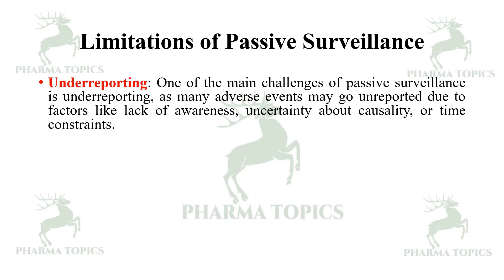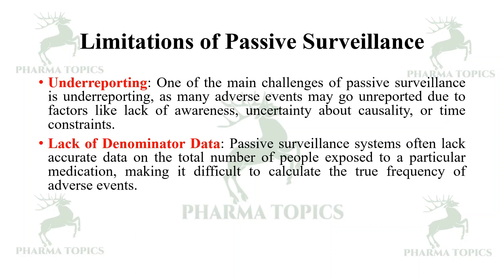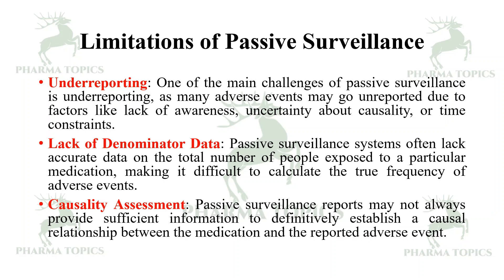Limitations of passive surveillance: Under-reporting is one of the main challenges, as many adverse events may go unreported due to factors like lack of awareness, uncertainty about causality, or time constraints. Passive surveillance systems often lack accurate data on the total number of people exposed to a particular medication, making it difficult to calculate the true frequency of adverse events. Additionally, reports may not always provide sufficient information to definitively establish a causal relationship between the medication and the reported adverse event.